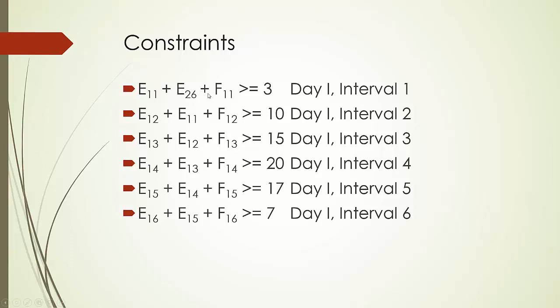And of course, we don't want to forget about the 4-hour people. Only one kind of 4-hour people will be on duty on day 1 in time interval 1—that is nothing but F_11. The sum of those three has got to be at least 3. That's our very first constraint for day 1 and time interval 1.